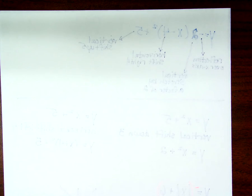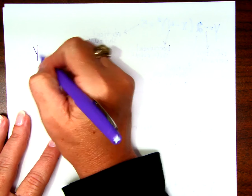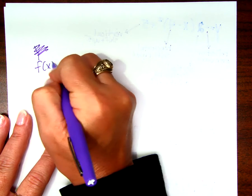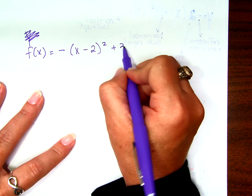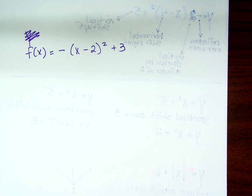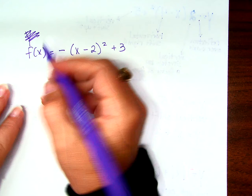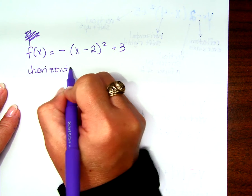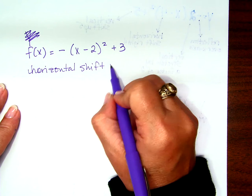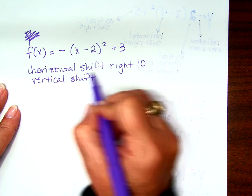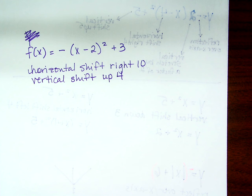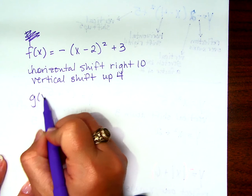Let me do one more try to make this as hard as I possibly can. Are you ready? Y equals, oh let me do it this way, f of x equals, so that we get some practice with function notation, negative x minus 2 squared plus 3. That's where I'm starting. That's already a lot of transformations from the parent, right? But that's where I'm starting. Then I want to do two transformations to it. I want to do a horizontal shift to the right 10 and I want to do a vertical shift up 4. So what is my new equation?